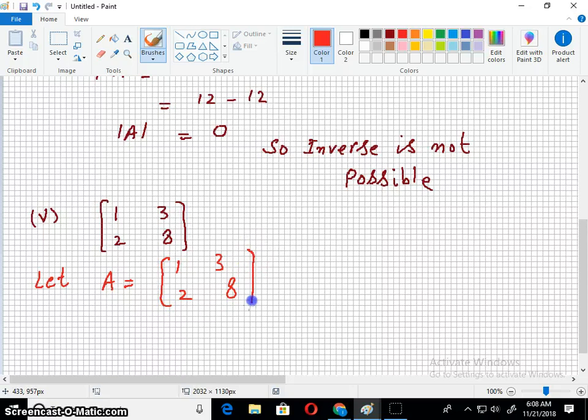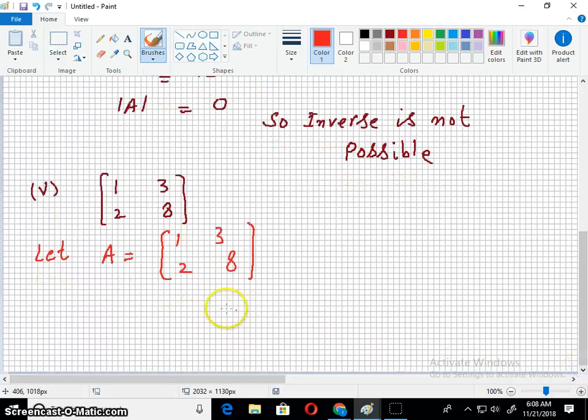And I want to find the inverse of this matrix. So first of all I would like to find its modulus or determinant. I shall multiply the elements in the diagonal and put a negative sign in between.